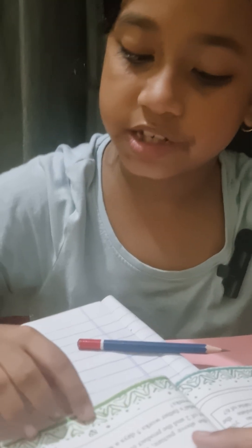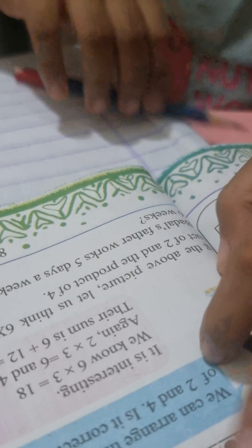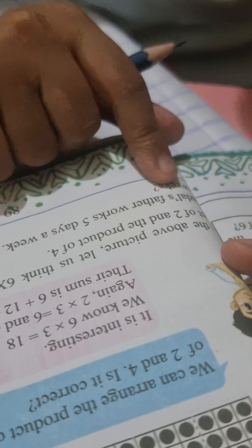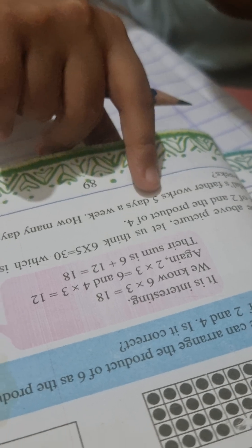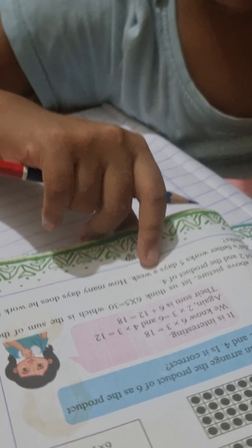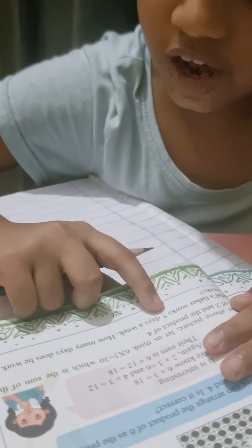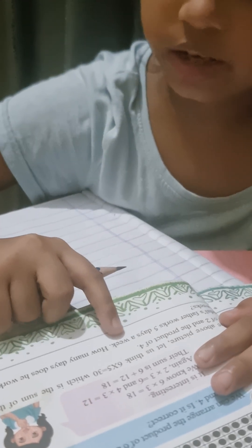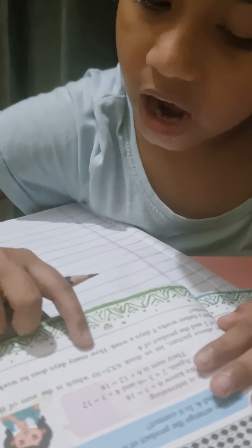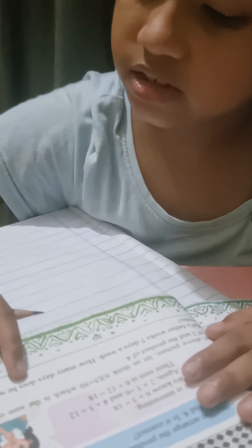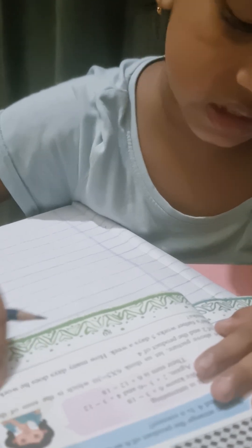Here I will do book page number 89, problem number one. So let's just start. Battle's father works five days a week. How many days does he work in six weeks? Okay.